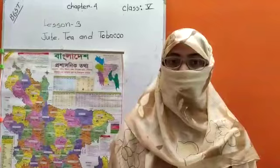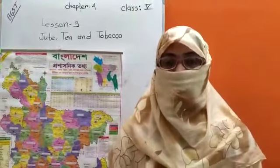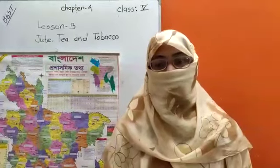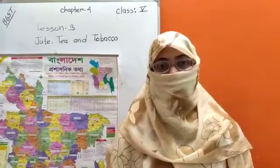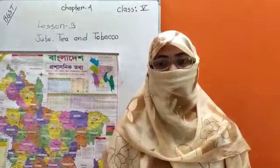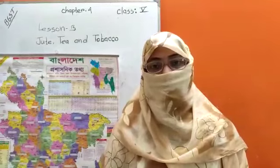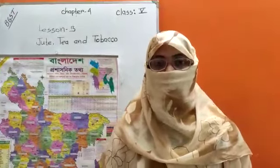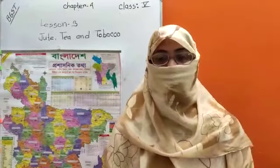Our today's topic is Jute, Tea, and Tobacco. In our last two classes we discussed the grain crops of Bangladesh. In the second class I discussed about potato. Though it is written in your book that potato is a root vegetable, potato is one type of carbohydrate. Instead of rice we can take potato. It is also very good for our health, and we eat the stem part of the potato.